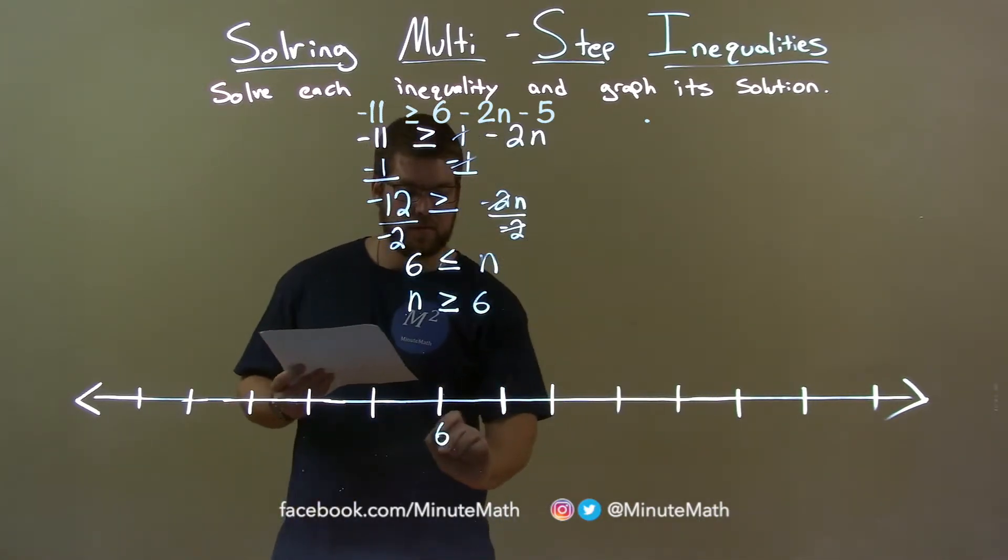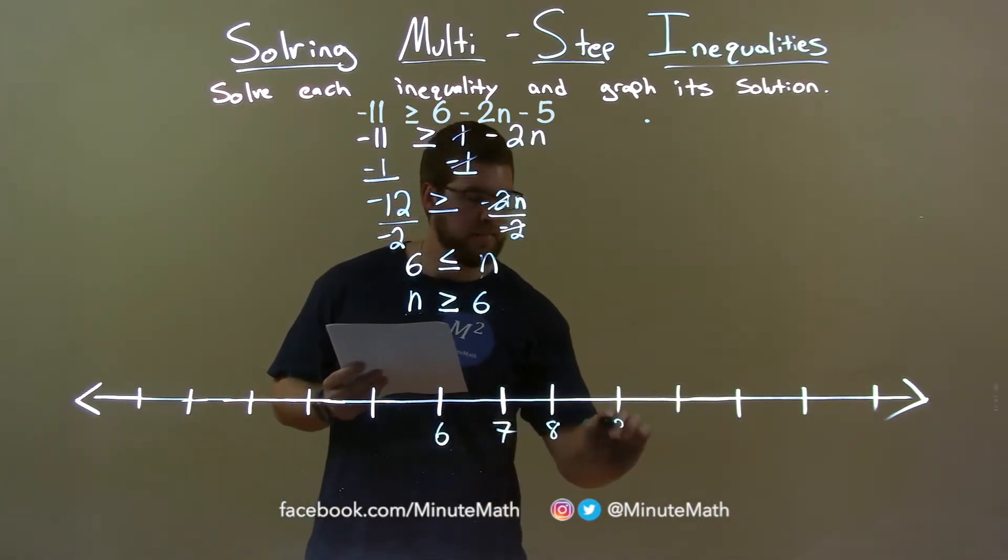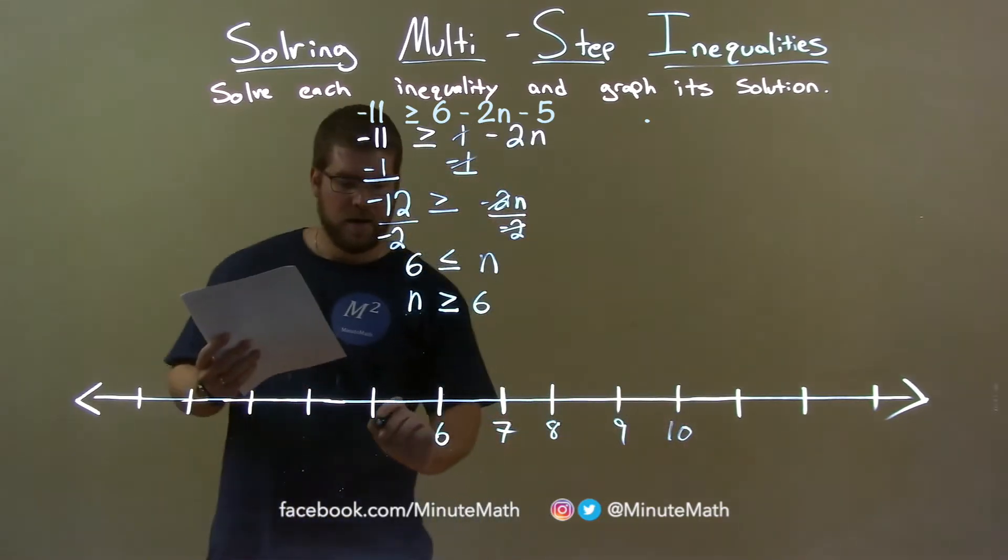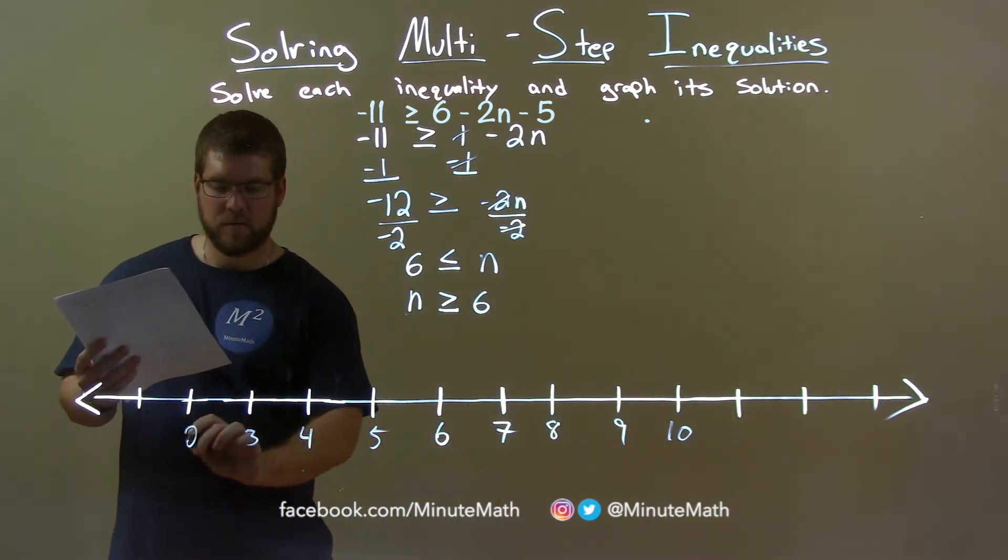So, let's graph this. Put a 6 here. 7, 8, 9, 10. And 5, 4, 3, 2.